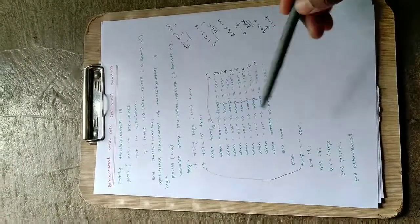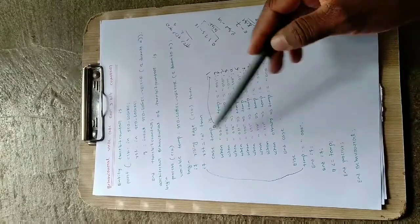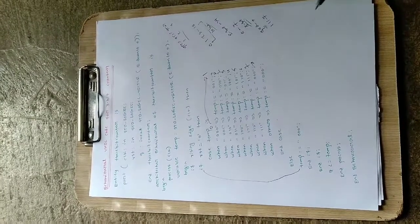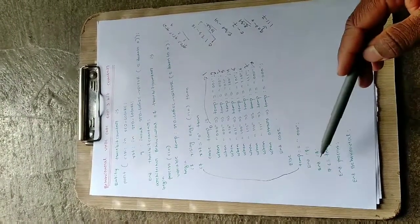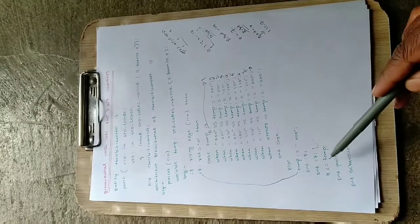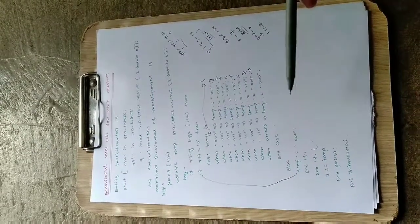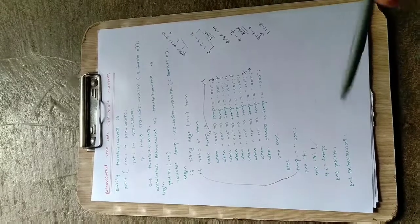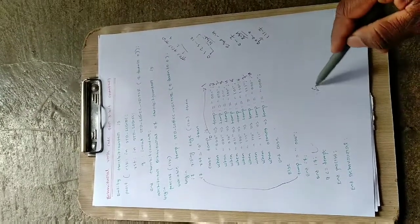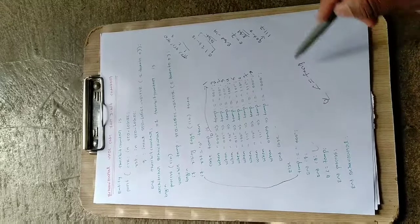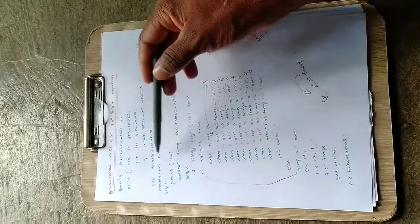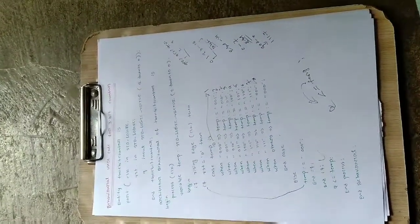The case statement ends with 'end case'. Then for the if-reset condition: if reset equals 1, temp is directly assigned 000. Then 'end if' for the reset condition, and 'end if' for the rising edge condition. Finally, Q is assigned the value of temp: 'Q <= temp'. This statement passes the temp value to the actual output Q. Then 'end process', and 'end behavioral' closes the architecture.